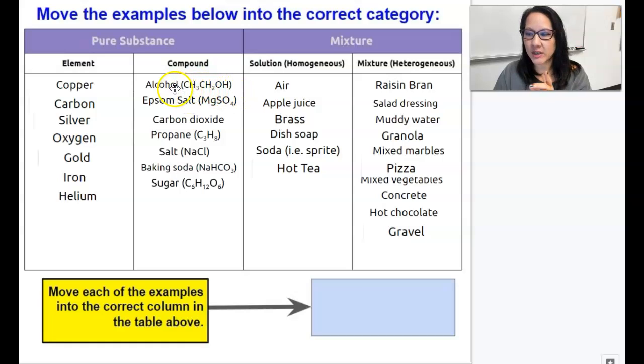Under the compounds column, you should see alcohol, epsom salt, carbon dioxide, propane, salt, baking soda, and sugar. So you'll also notice that each of these gave you a formula, a chemical formula.